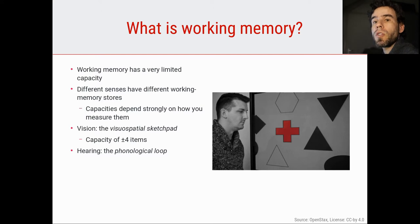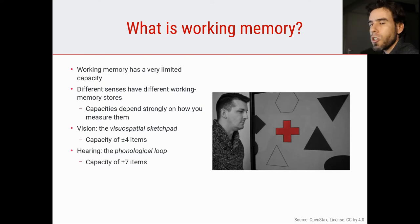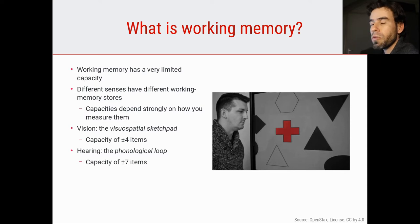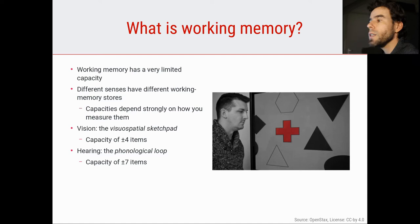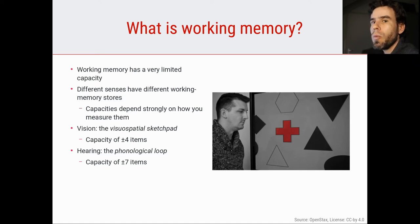Your auditory memory, sometimes called the phonological loop, has a somewhat higher capacity of about seven items. So if you hear a phone number of ten digits, that's too much — you won't really be able to remember that. But seven digits is barely doable for a lot of people; you might be able to rehearse those seven digits effectively in your auditory working memory. So for vision, seven items would be too much, but for audition it would be okay.